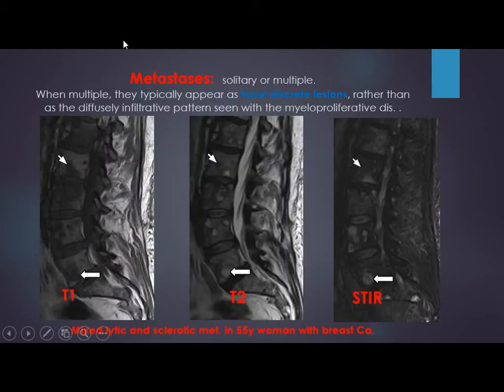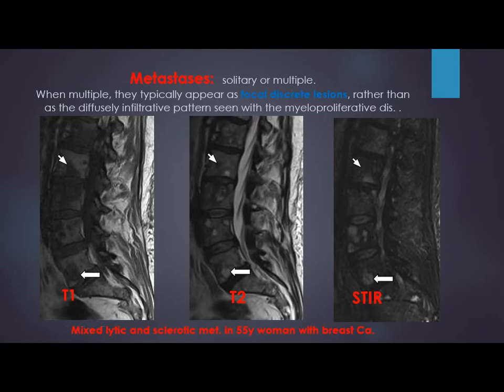Shifting to multifocal abnormality in the bone marrow — metastasis, multiple myeloma, and lymphoma. Metastasis can be solitary or multiple, but when multiple, it is not like myeloproliferative disorder — it is not diffuse, it is discrete focal lesions.